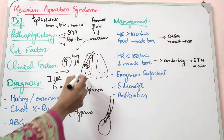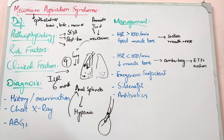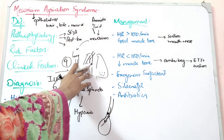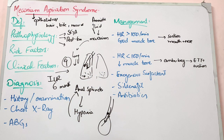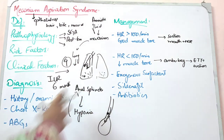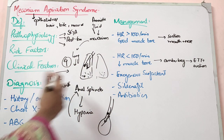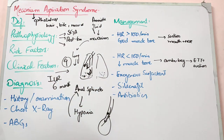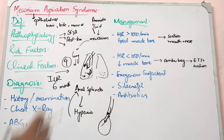If meconium settles in the distal airways, the child will show signs of respiratory distress including intercostal retractions, nasal flaring, tachycardia, and tachypnea. These are signs of lung involvement. The child will also have subcostal and intercostal recessions. Oxygen will not adequately reach the blood, resulting in hypoxemia.